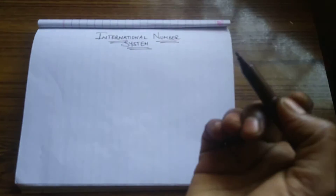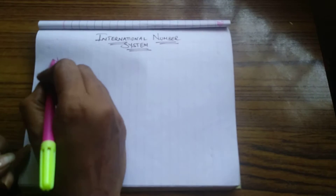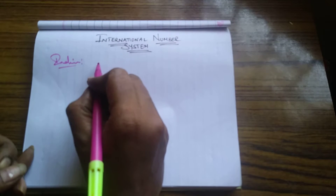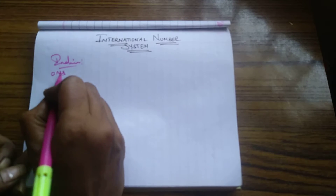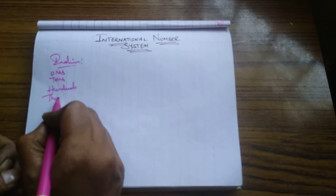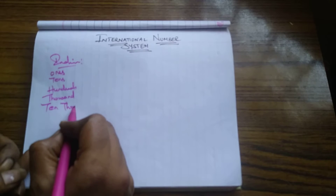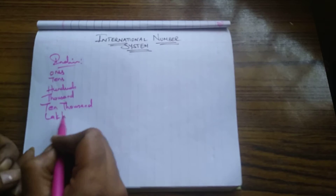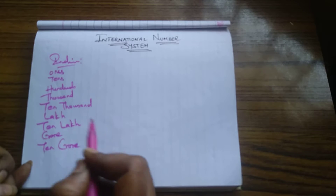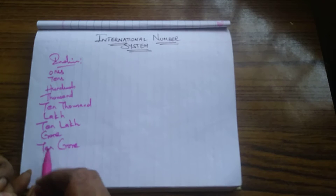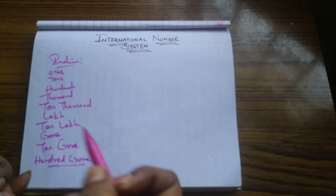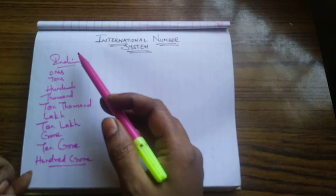Now just a small recap of the Indian system. We have ones, tens, hundreds, thousands, ten thousands, lakhs, ten lakhs, crores, ten crores, and hundred crores. This is how we have learned to name larger numbers using the Indian system.